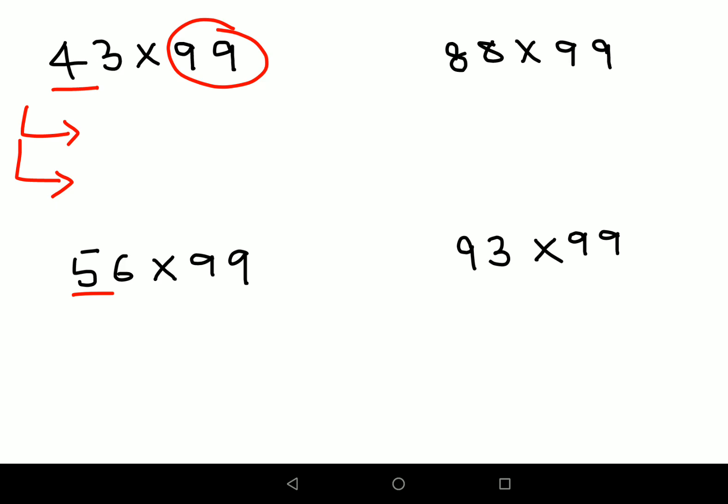The first thing is you have to subtract this number by one. So this becomes the first part of your answer. Next, you need to subtract this answer, whatever answer you get over here, from 99.